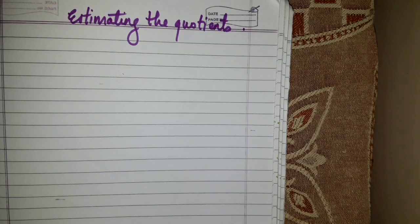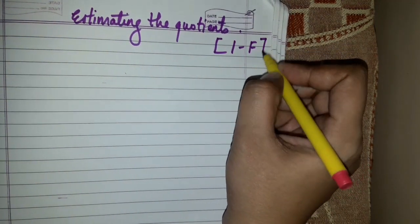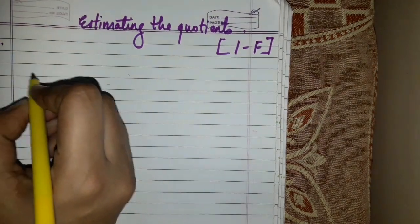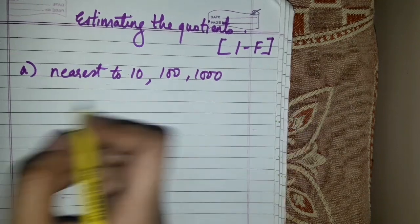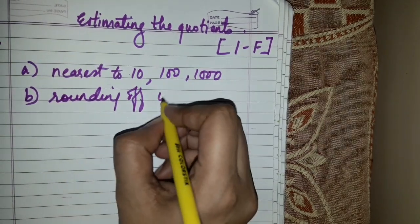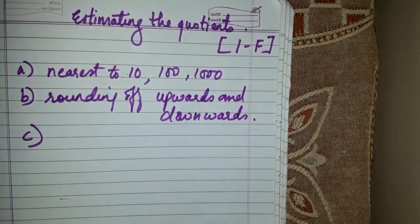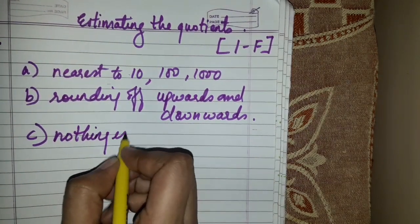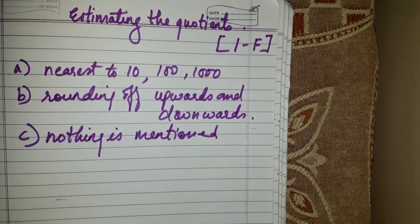Now let's begin with the new topic: estimating the quotients, in context with Exercise 1F. Till now we have done two kinds of rounding off — nearest to 100, 1000, and rounding upwards and downwards. This third case is new: when nothing is mentioned — neither the place value to round to, nor upwards or downwards — how do you round off?